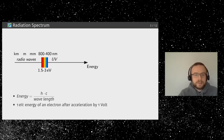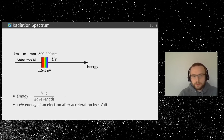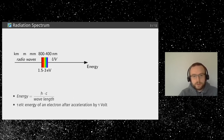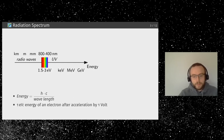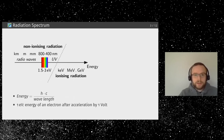The electron volt relates the energy of an electron after being accelerated by one volt, and is the unit particle physicists prefer. Wavelength and energy are inversely proportional — increasing energy means shorter wavelength. As we go from thousands to millions to giga electron volts, we reach a critical distinction: the right portion of the spectrum is ionizing radiation and the left is non-ionizing. UV sits somewhat in the middle — some parts can be ionizing depending on the material.